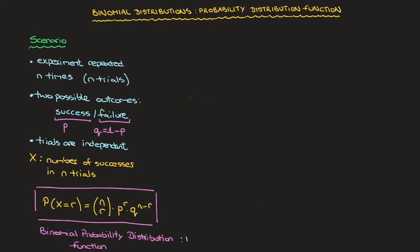Our calculators will usually call this function binom pdf. Now that we know the scenario for binomial distributions as well as the probability distribution function, let's work through an example. Let's say we're dealing with a biased coin.